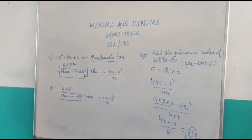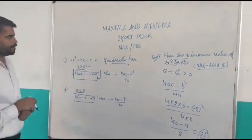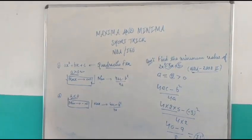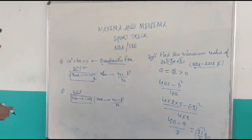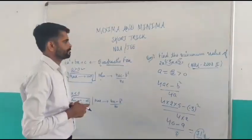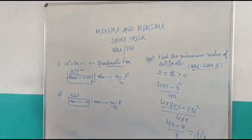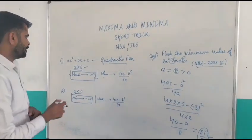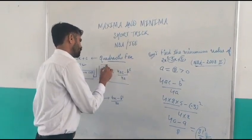So, dear students, we can find out any quadratic function in which A is positive, or A is negative. If A is positive, then we have to find out only minimum value.